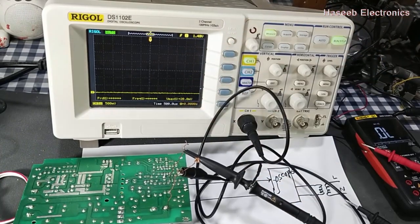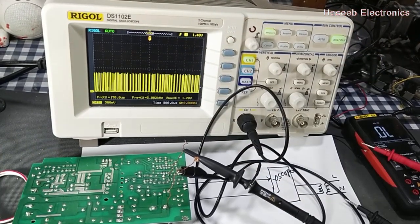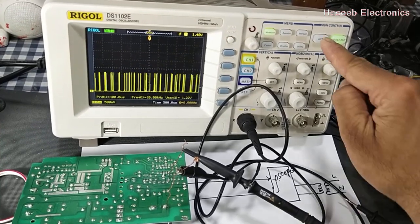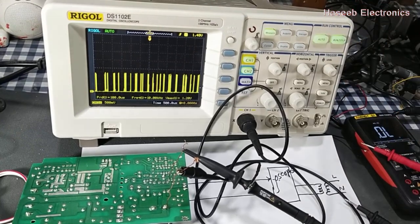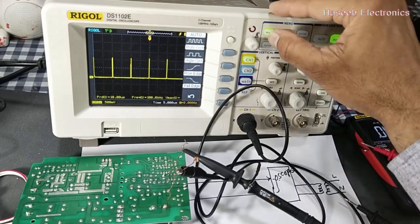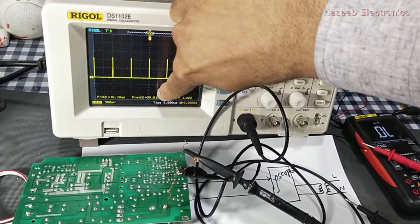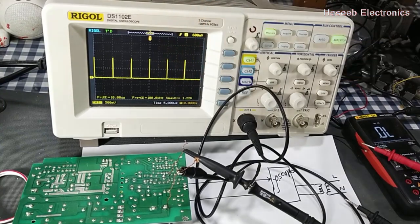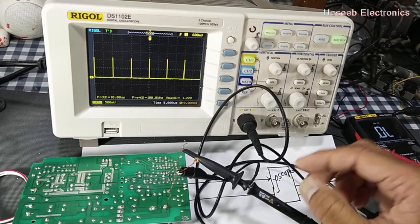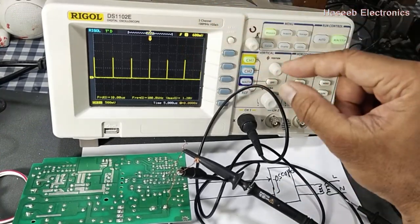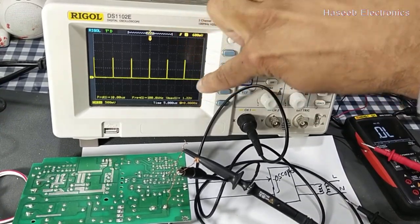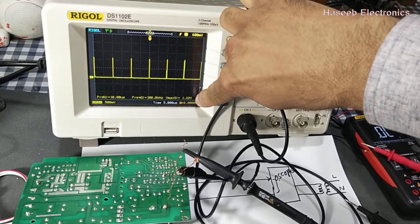Now I am applying power. When power is applied, never touch any component in this live circuit. Set the auto button. Now it is displaying 100 kilohertz at 1.2 volt. That means if we consider the attenuation, it's 1.2 multiplied by 10, so around 12 volt.